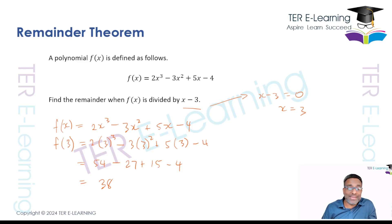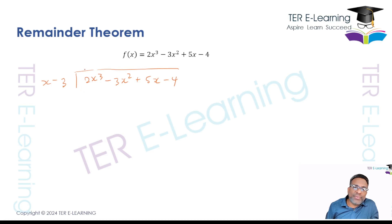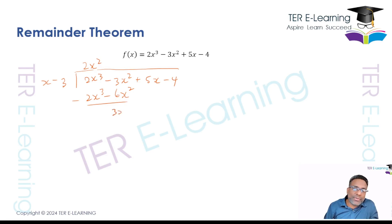Now I'm going to do this a second way using long division to verify. We have 2x cubed minus 3x squared plus 5x minus 4 divided by x minus 3. To get 2x cubed, the first term must be 2x squared. Multiplying: 2x squared times x minus 3 gives 2x cubed minus 6x squared. Subtracting: 2x cubed minus 2x cubed is 0, and minus 3x squared minus minus 6x squared gives 3x squared.